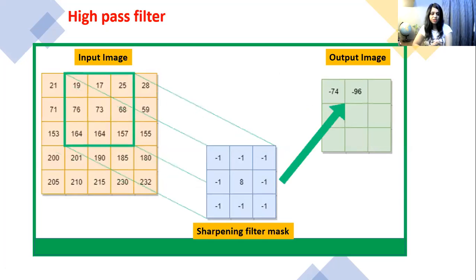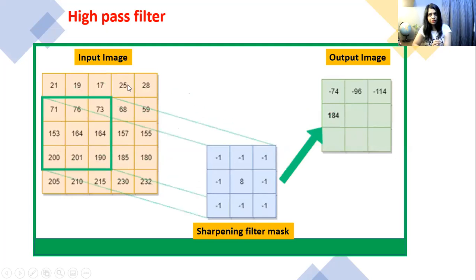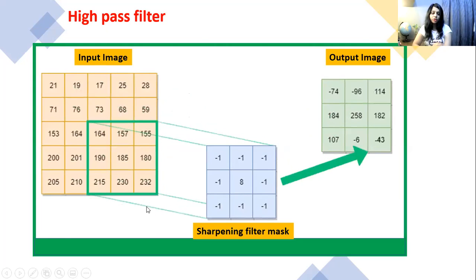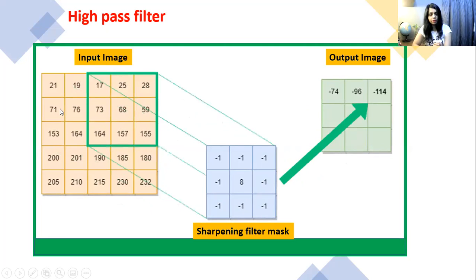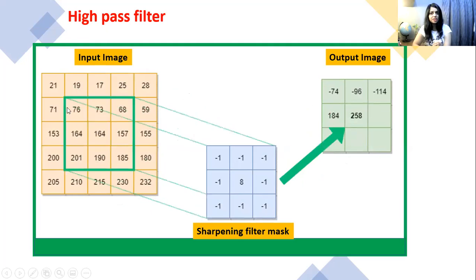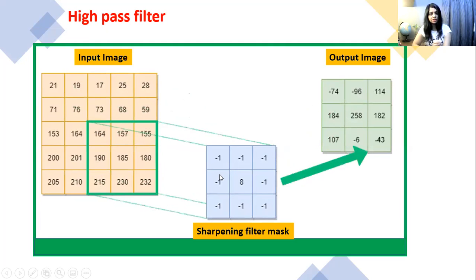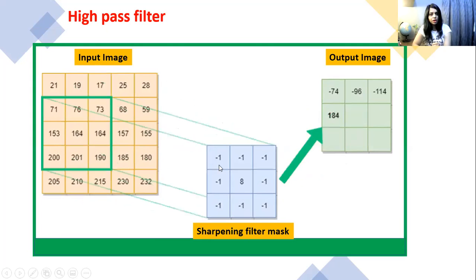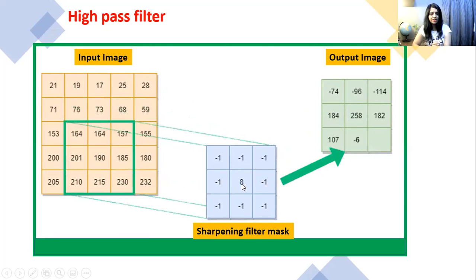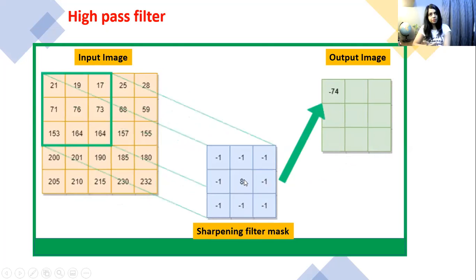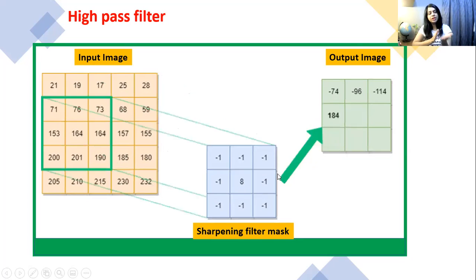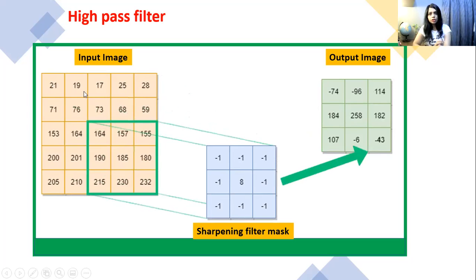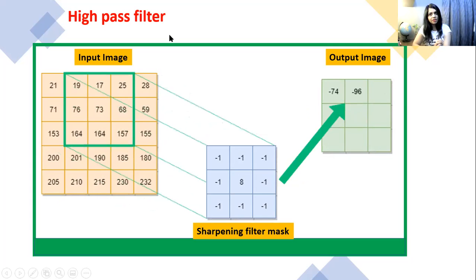Now let's see the high pass filter. Here we have a five-by-five image. It is not padded with zero and no wrap-around is applied — it is applied directly on the image, and that's why the output image size is smaller compared to the input image size. The sharpening filter mask for high pass filter has minus one all around and eight at the center. The central value could be eight, nine, or similar — a little variation will be there in the output image if you change this central value.